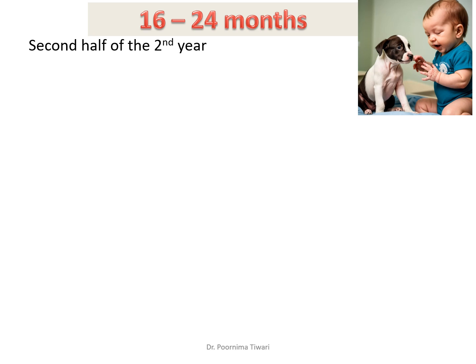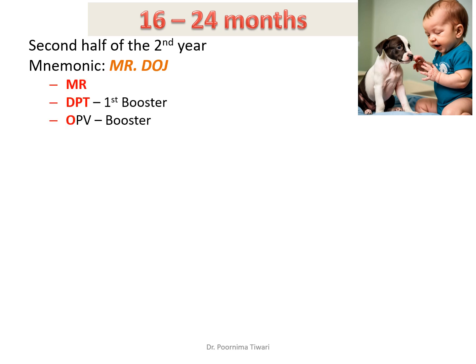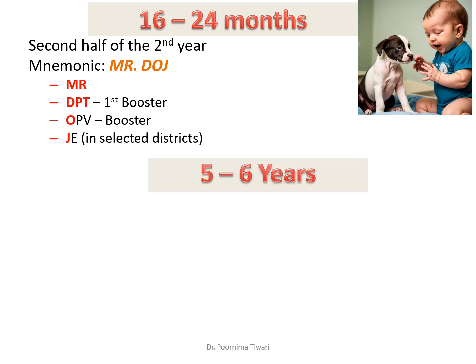At 16 to 24 months, the second half of the second year, the mnemonic is 'Mr. DODGE': MR again for Measles-Rubella, D for DPT first booster, O for OPV booster, and J for Japanese Encephalitis in selected districts.